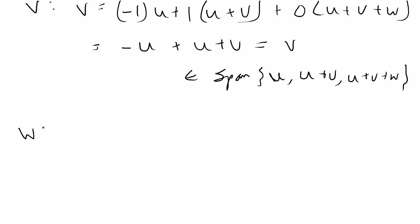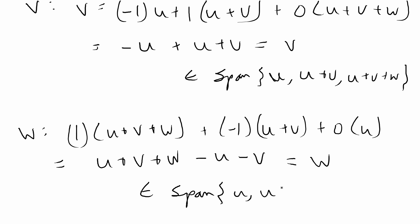Finally for w, we're going to have 1 times u plus v plus w, and then I'm going to do minus 1 or plus negative 1 times u plus v, and then 0 times u, and that gives u plus v plus w minus u minus v, which is equal to w. So this is also in the span of u, u plus v, and u plus v plus w.